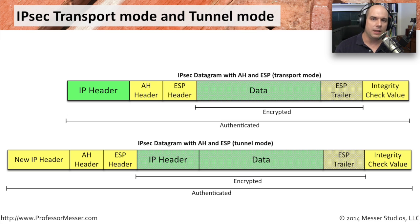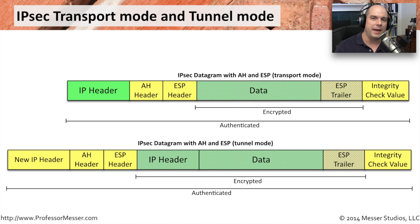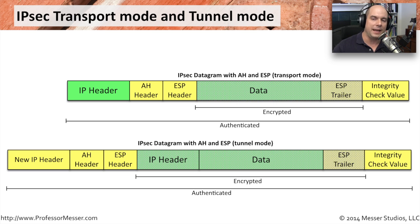IPsec has two modes of operation. Transport mode is used between a client and server, where existing IP packets are used and IPsec protection is added around them — packets travel normally with everything inside encrypted and protected. Tunnel mode is typically used between two endpoints like two firewalls, where an encrypted tunnel is built between them, all information is encapsulated inside the tunnel and sent to the other side, then pulled out and placed back on the network. In tunnel mode, a new IP header is built, everything is jammed into that packet, encrypted with IPsec, and sent across.